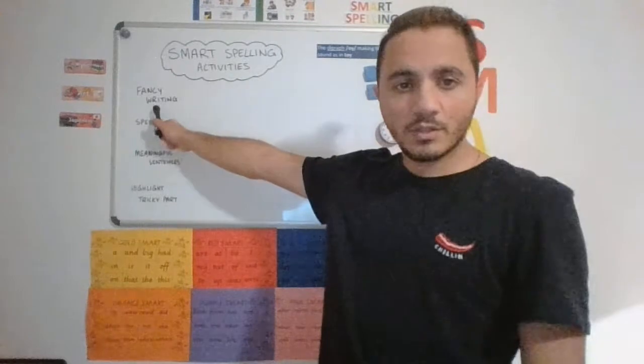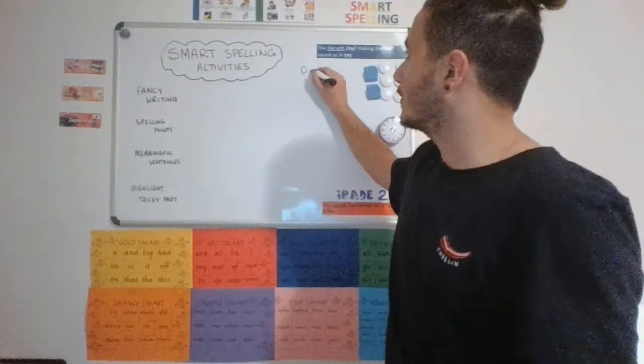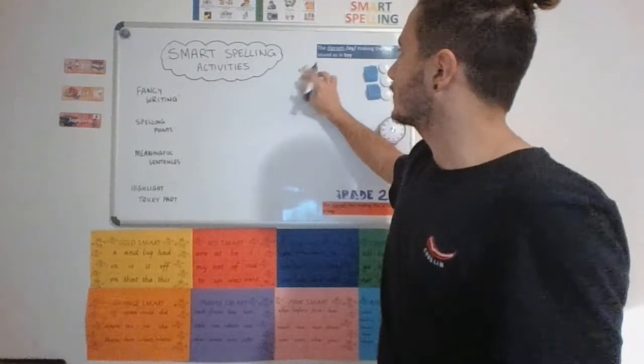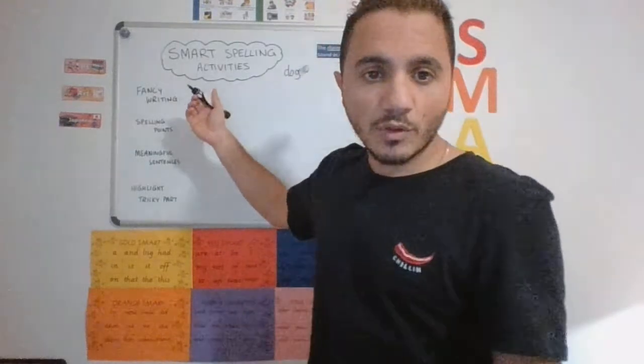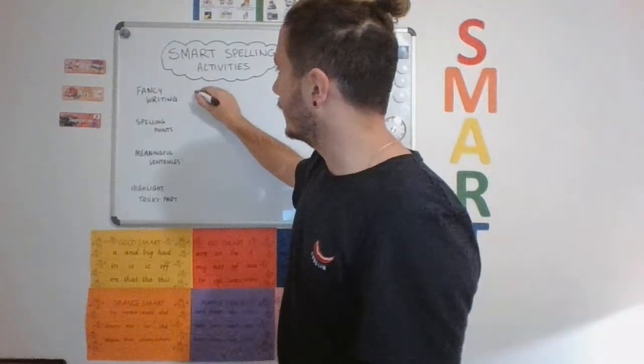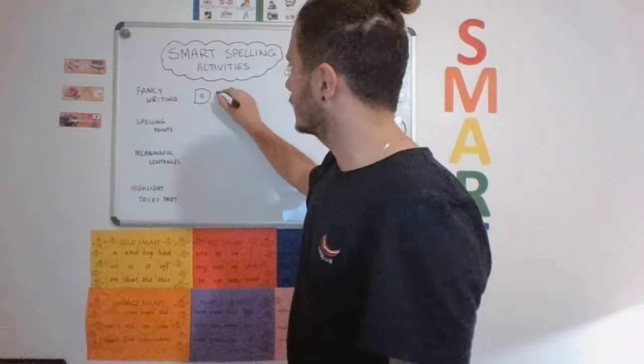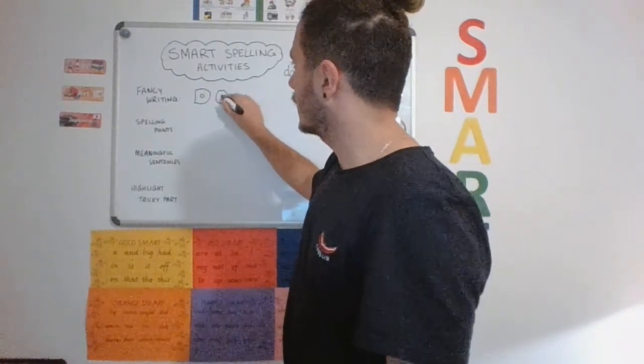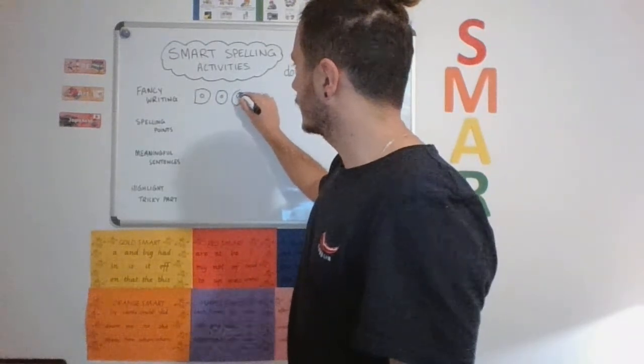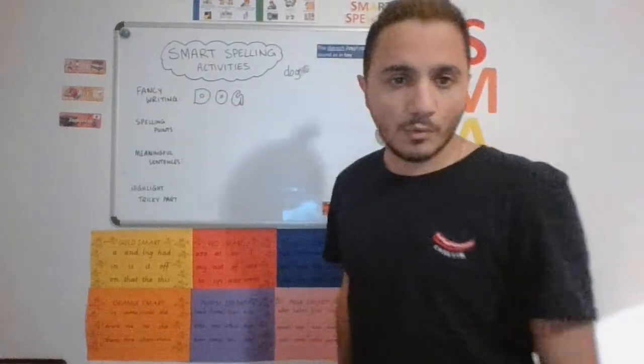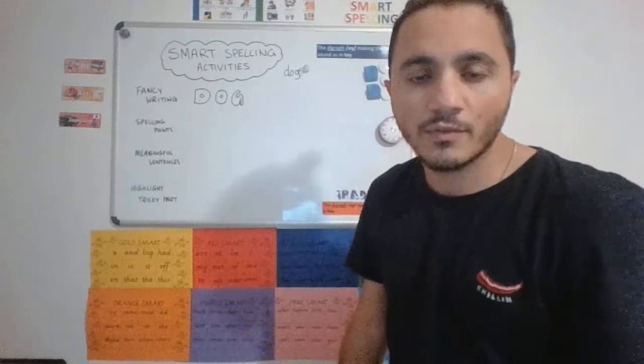So the first one that you might choose to do is fancy writing. So I'm going to use the word dog. Dog's going to be the word that I'm going to practice. Okay, so fancy writing. I might do them all in capitals and maybe even bubble writing like this. Very important that whichever activity that you do, you still put your lines through the word for every sound.